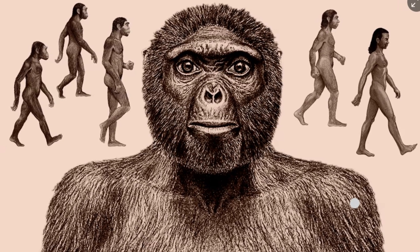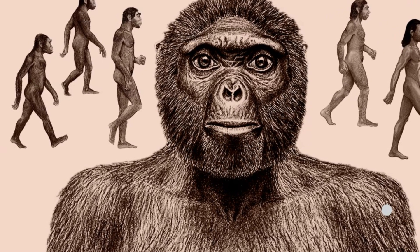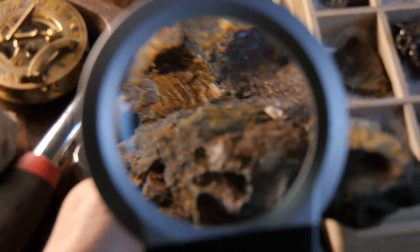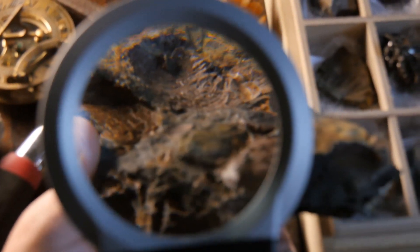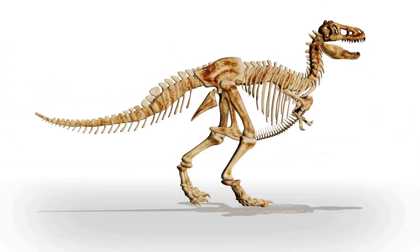The common ancestor of humans and chimpanzees was neither human nor chimpanzee. Picture a population of primates living millions of years ago. They weren't humans or chimpanzees, but a different species altogether. Over time, one group of this species ended up evolving into what we now recognize as humans, while another group evolved into modern chimpanzees.